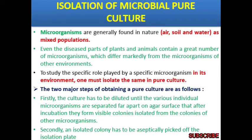To study the specific role played by a specific microorganism in its environment, one must isolate it in pure culture. The two major steps of obtaining pure culture are: first, the culture has to be diluted until the various individual microorganisms are separated far apart on the agar surface, and then after incubation they form visible colonies — visible colonies which are isolated from the colonies of other microorganisms.